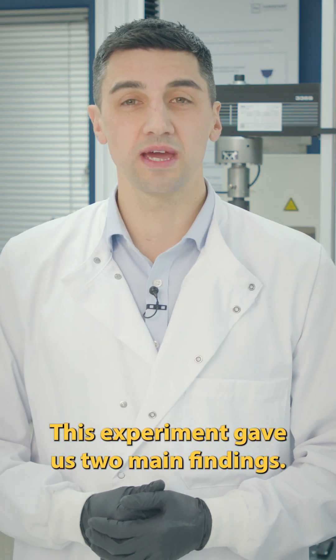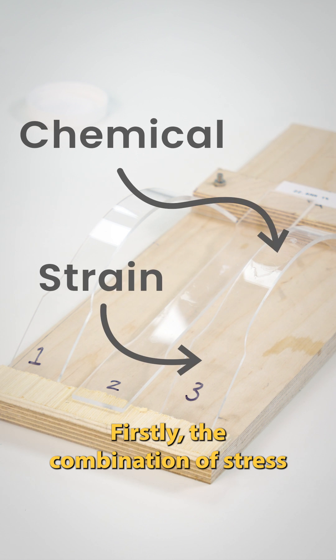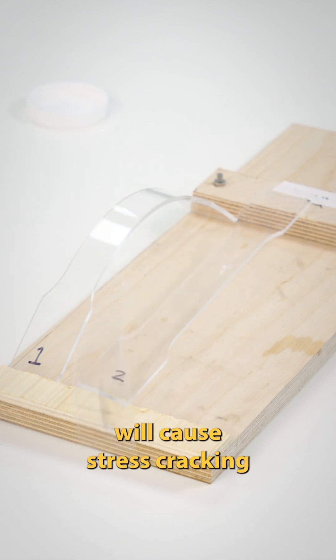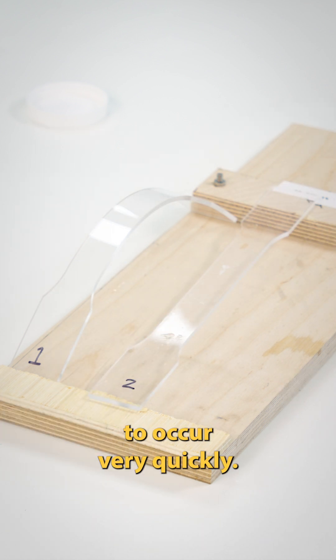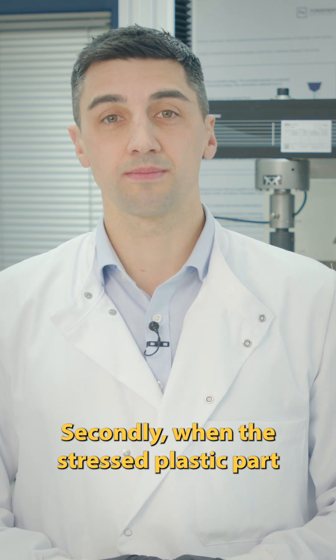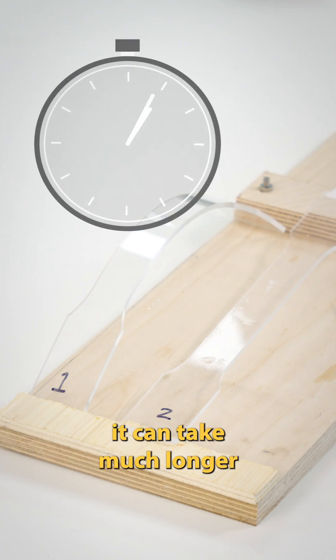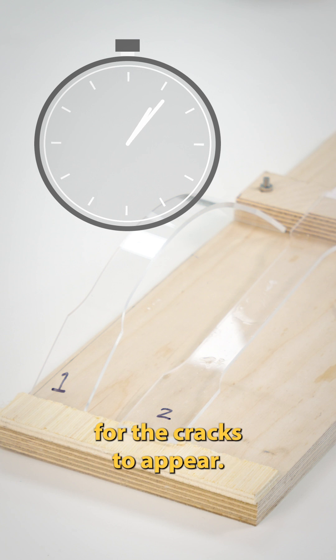This experiment gave us two main findings. Firstly, the combination of stress and aggressive chemicals will cause stress cracking to occur very quickly. Secondly, when the stressed plastic part has no chemical or environmental factor, it can take much longer for the cracks to appear.